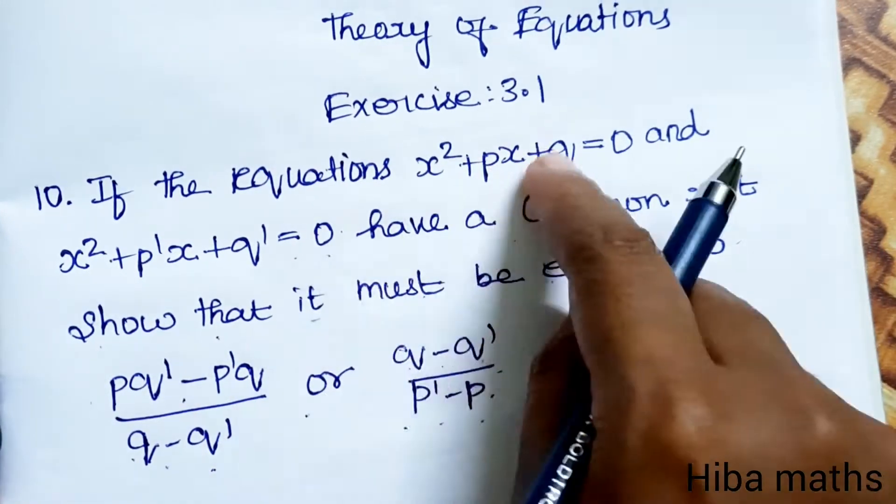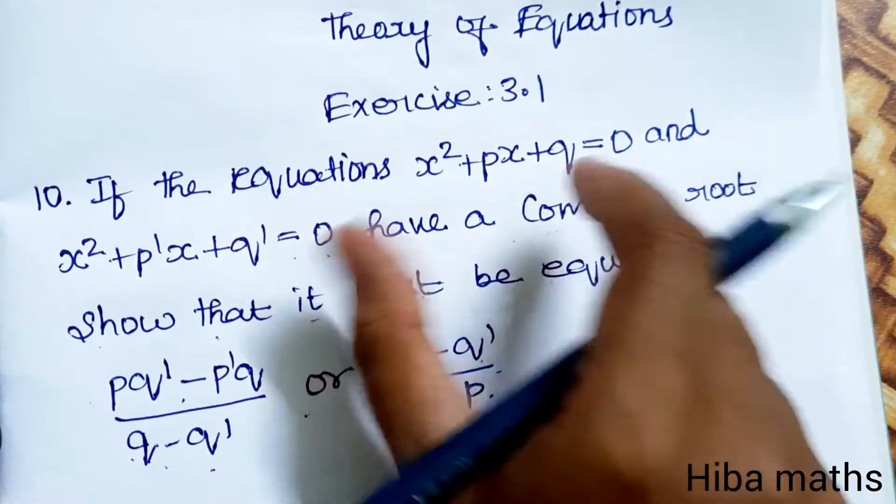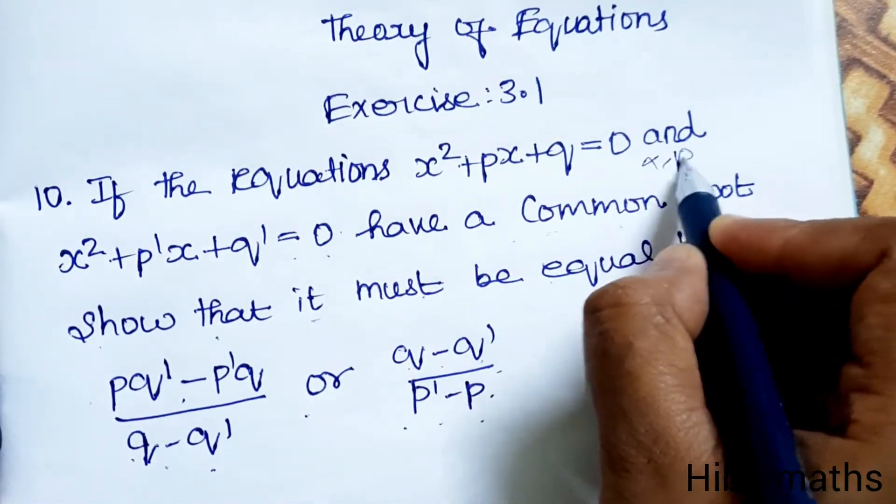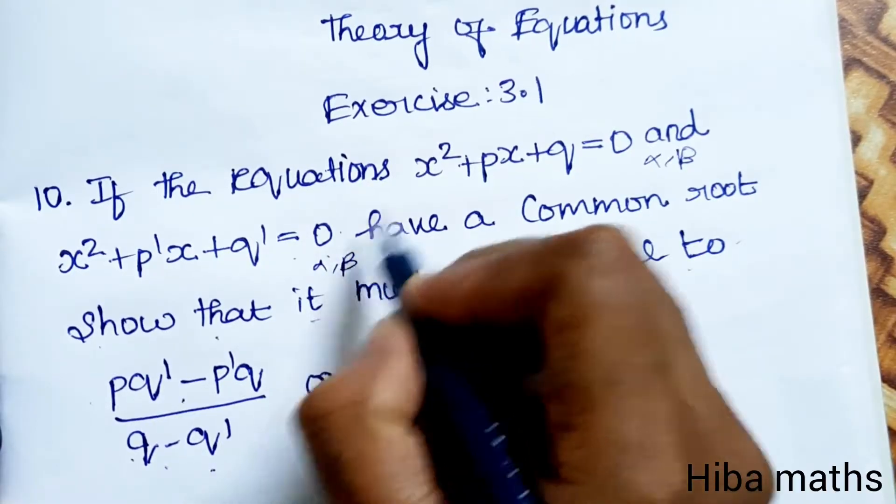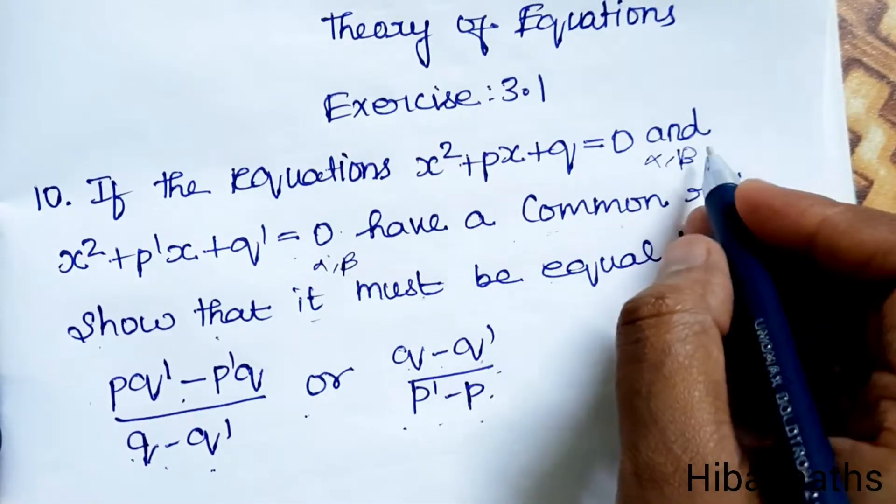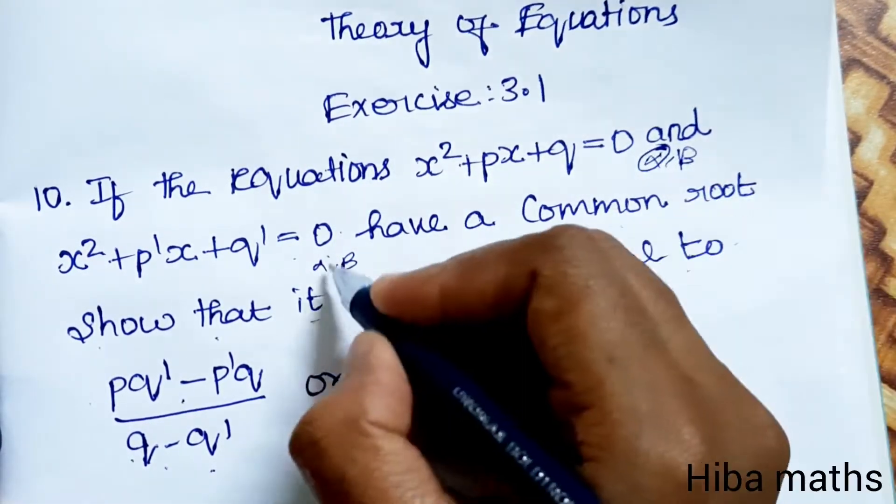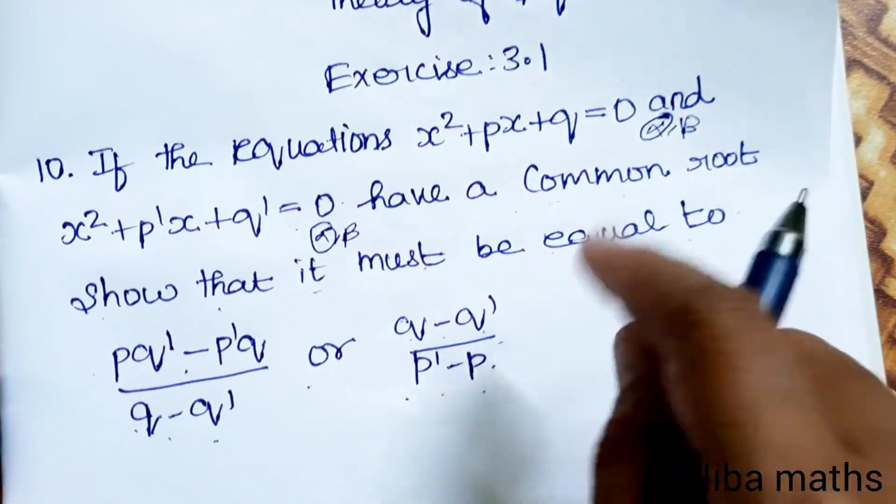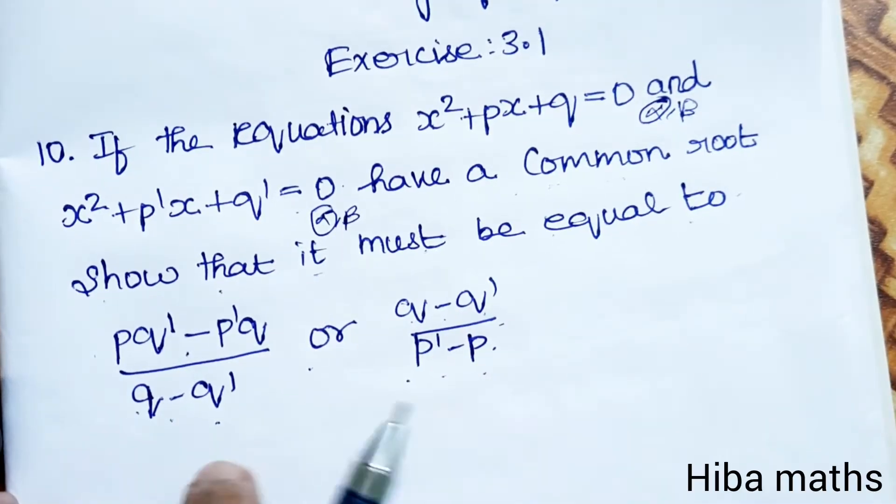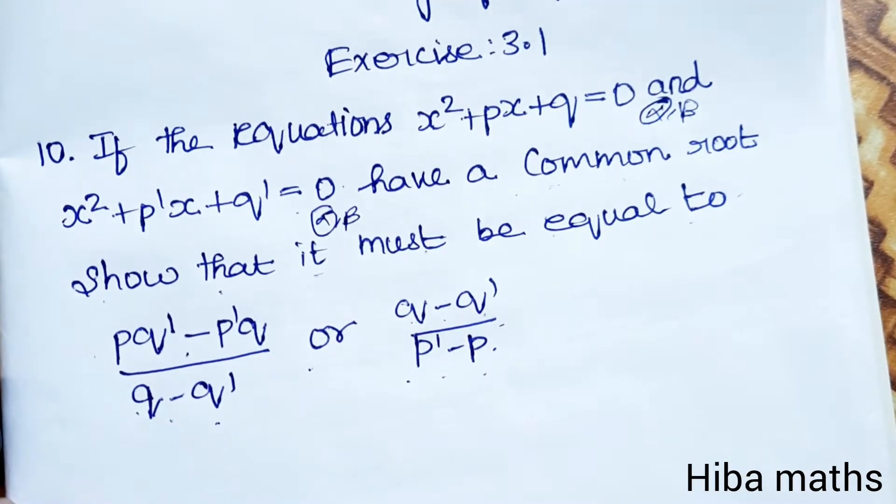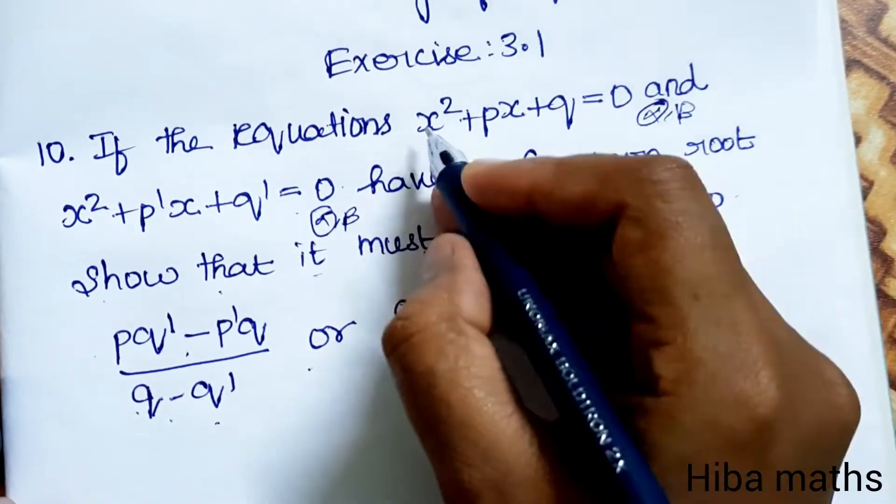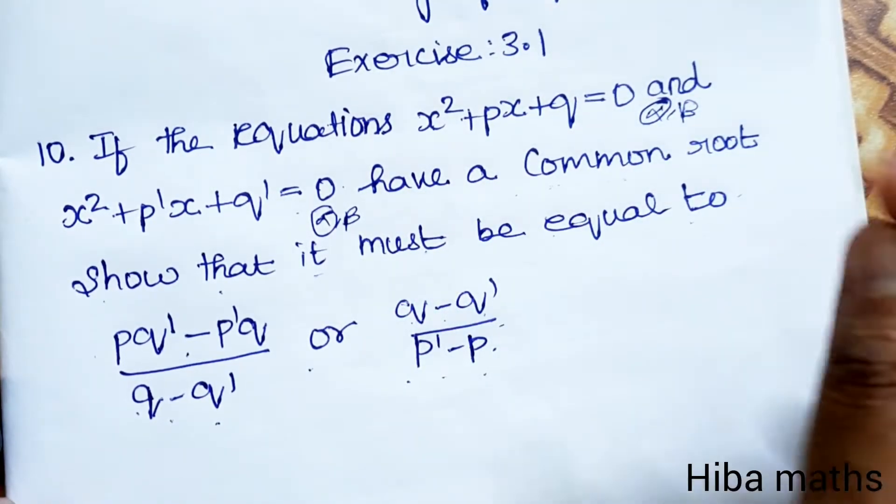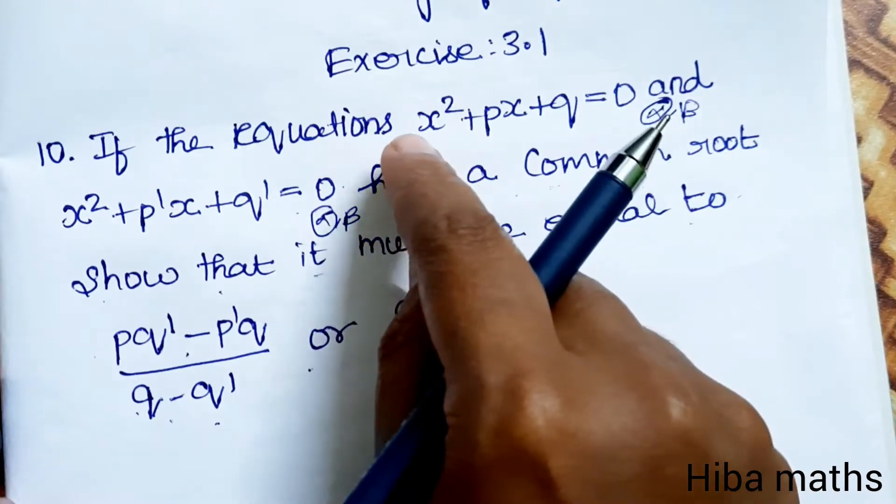The question is that these two equations have a common root. If one equation has roots alpha and beta, and the other equation also has roots, one root is common. Let's say alpha is the common root. To prove this, we will substitute the root values, that is x = alpha, and replace alpha in both equations.